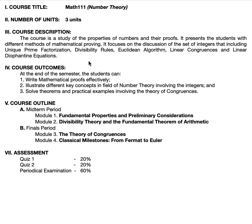Take it easy — I will discuss this one by one. The four course outcomes are: one, write mathematical proofs effectively. If you haven't mastered mathematical proofs in Logic and Set Theory — which is the prerequisite of this subject — we will review that. Two, illustrate different key concepts in number theory involving the integers. Three, solve theorems and practical examples involving the theory of congruences, also known as modular arithmetic, which we'll learn in the finals period.